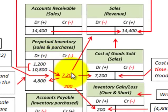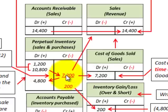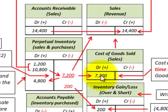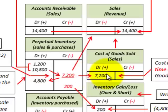We'd go into our perpetual inventory account and reduce it by $7,200 — crediting the perpetual inventory for $7,200. Then the debit amount goes to cost of goods sold for $7,200, which reduces our sales revenue since cost of goods sold appears on the income statement.